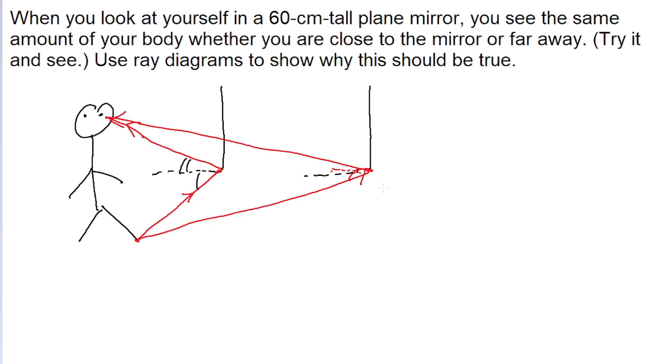So like in this case, for example, we can kind of see from this diagram that a ray that reflects from your toes all the way up to your eyes will do so as long as it strikes the mirror at this same height, which is, I guess in this case, about half the height of the person. And that height, as long as that height is still available, then this does not change.